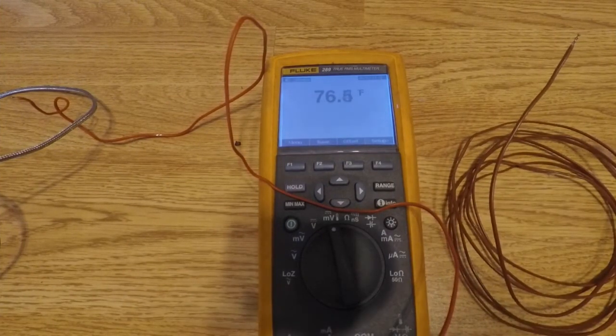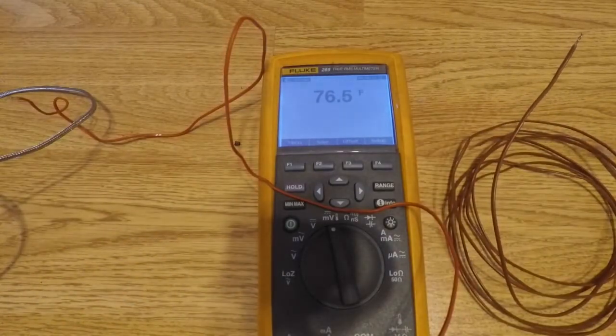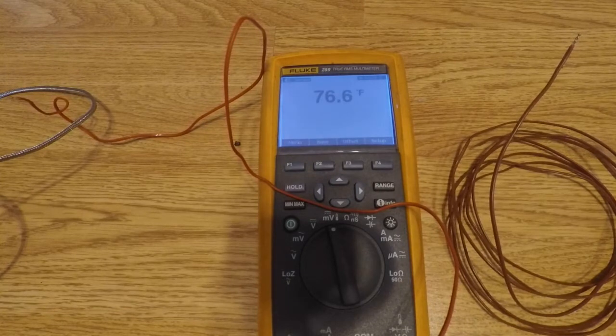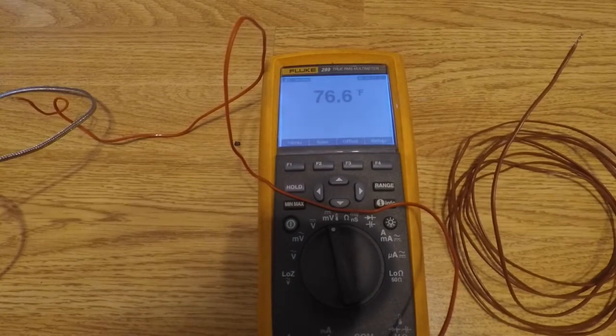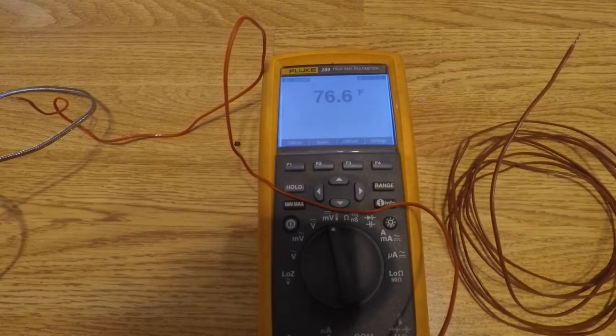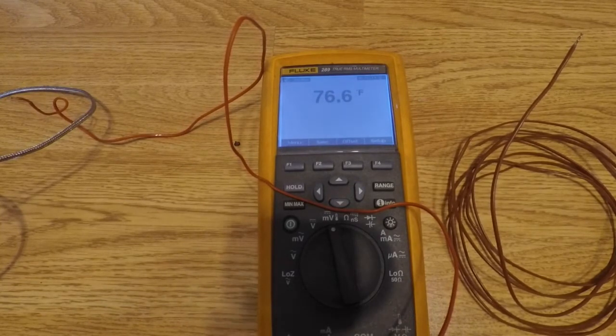I wanted to do a quick video about thermocouples. I started using them a couple years ago for a lot of different testing and they can be very useful. This is a Fluke 289 multimeter and it has a built-in type K thermocouple reader.